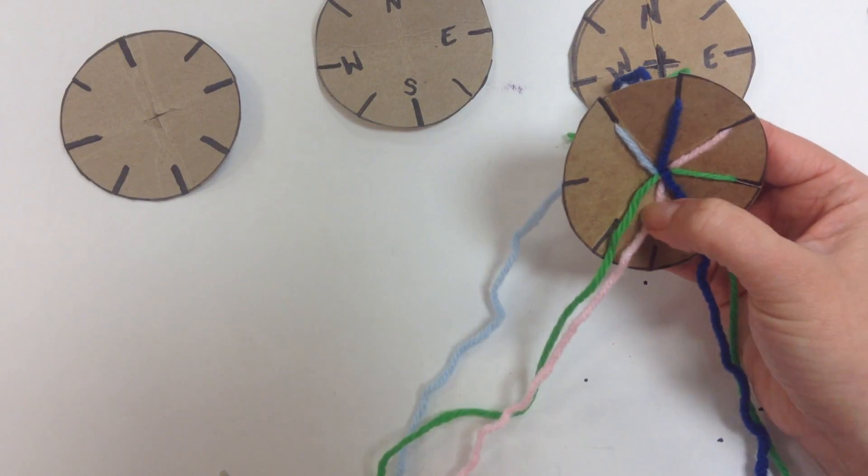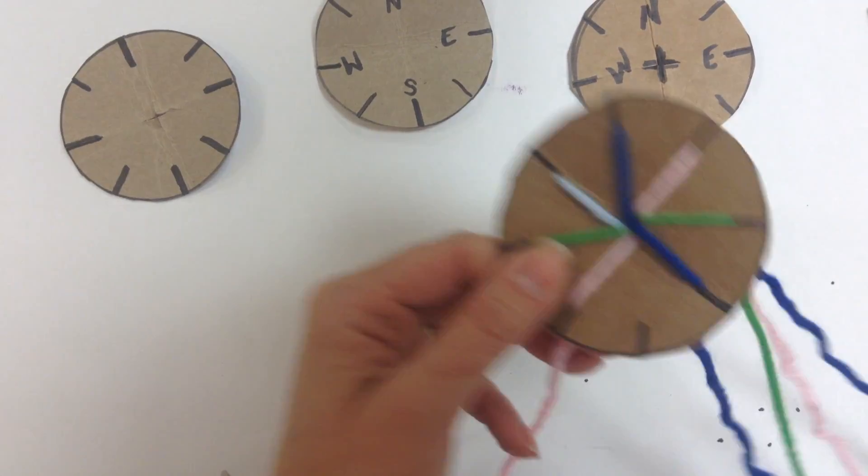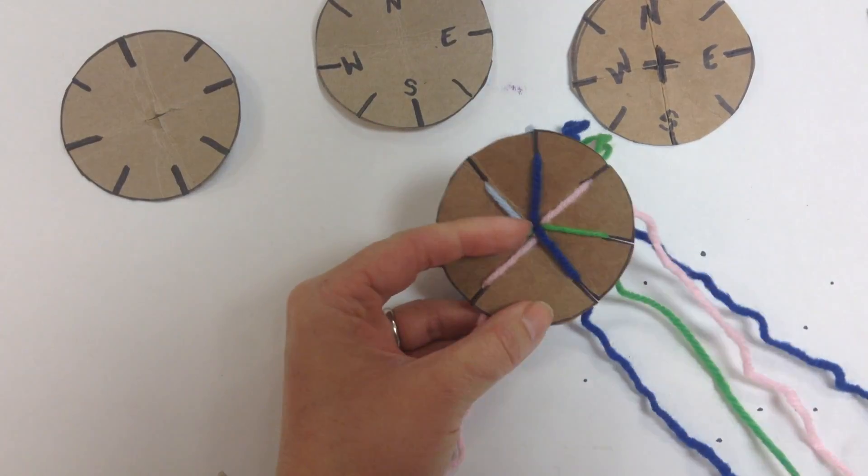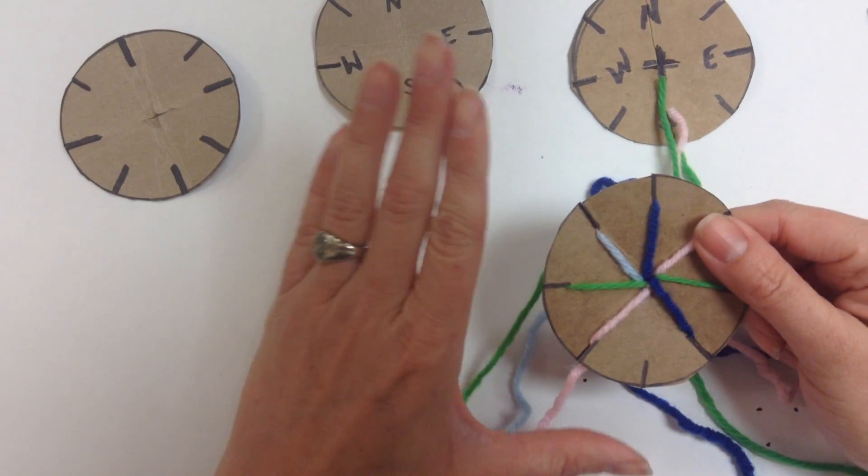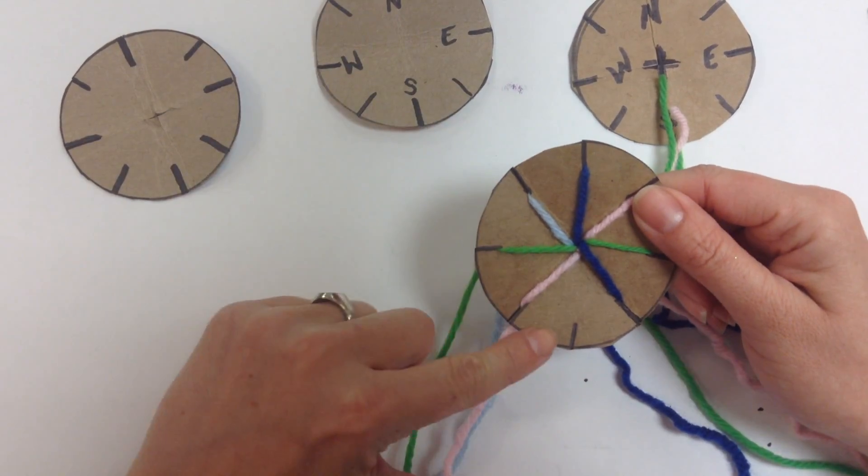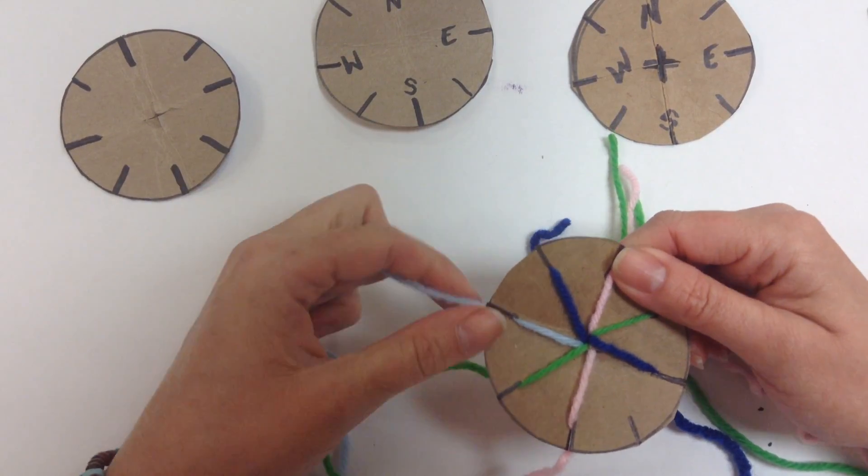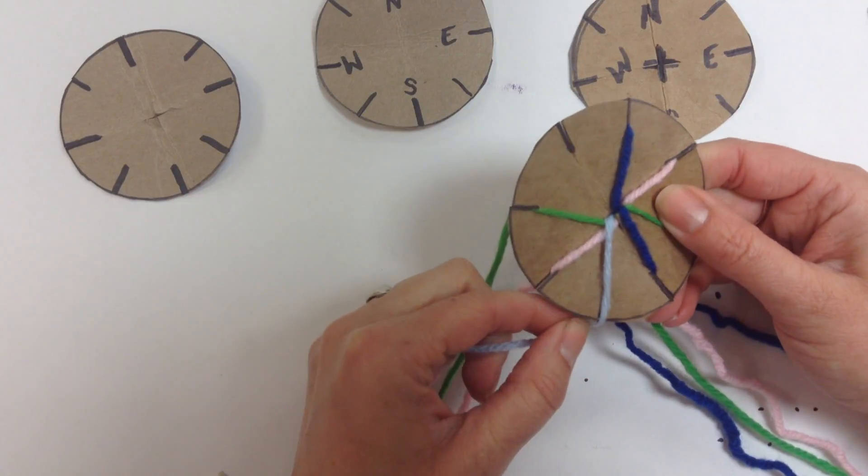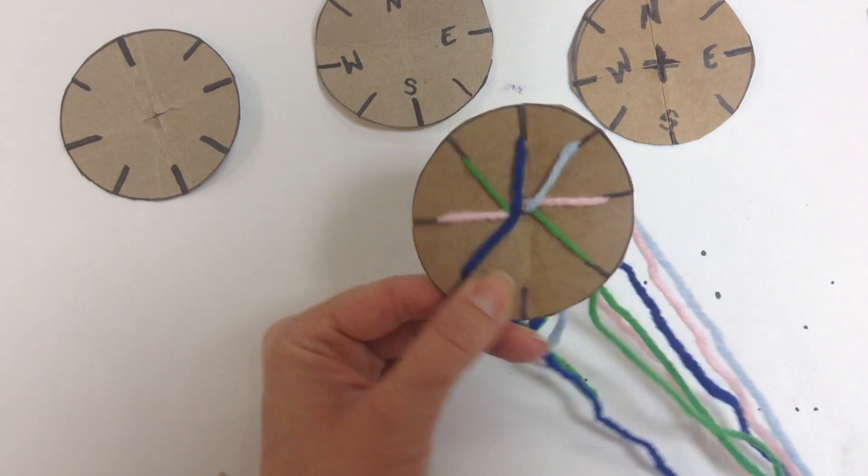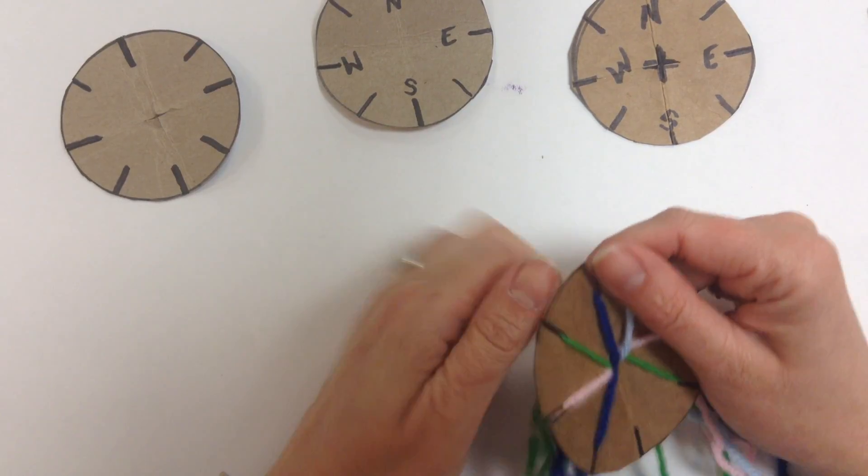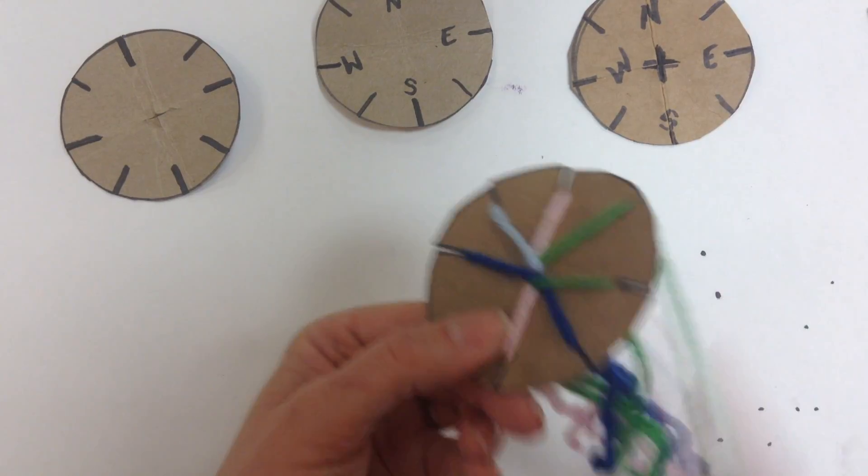The interesting thing about this is you're always going to have one empty slot. The easy way to do this braiding technique is keep that empty slot at the bottom. Then I always start on the left side, grab one, two, three—the third one up—and bring it across those two and put it into the empty slit. Then I turn the whole thing upside down, count up one, two, three, and grab that one that's three away and pull it down to the empty slit.